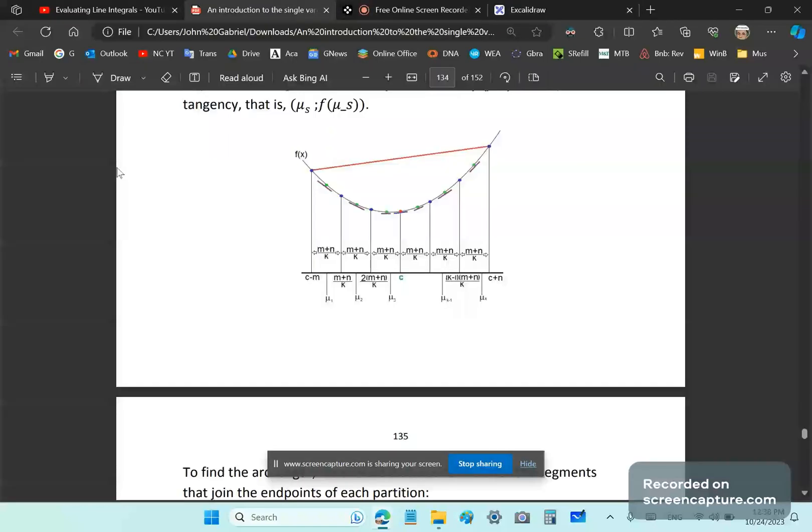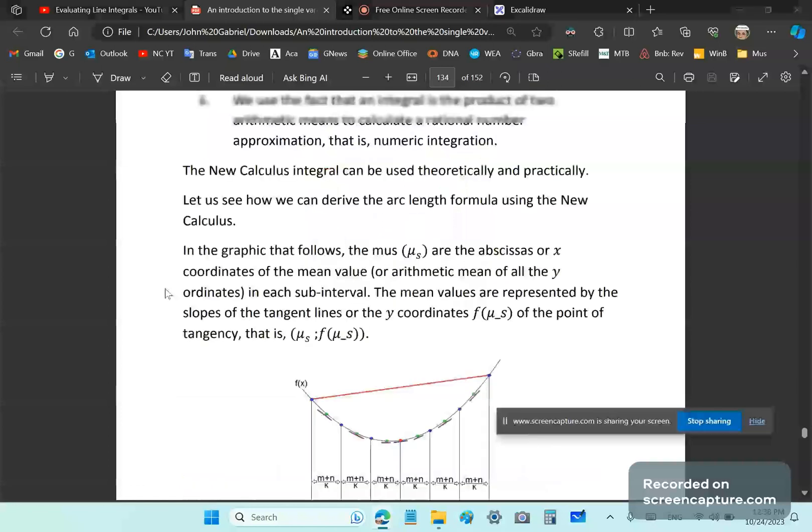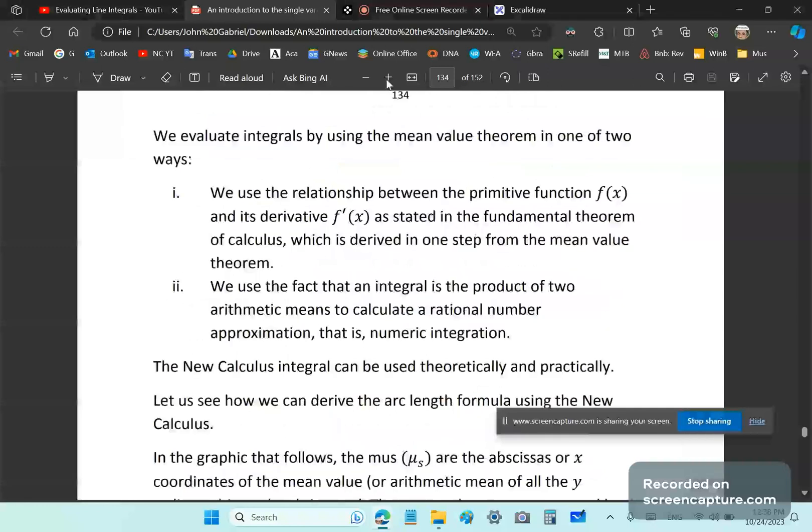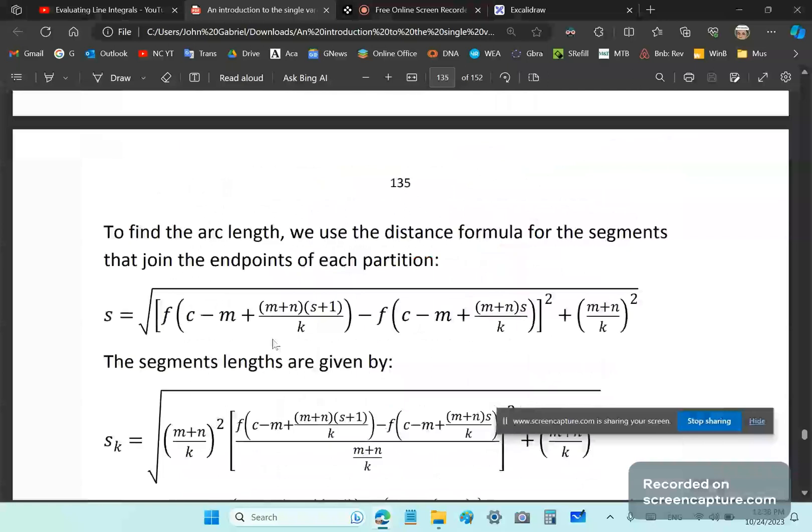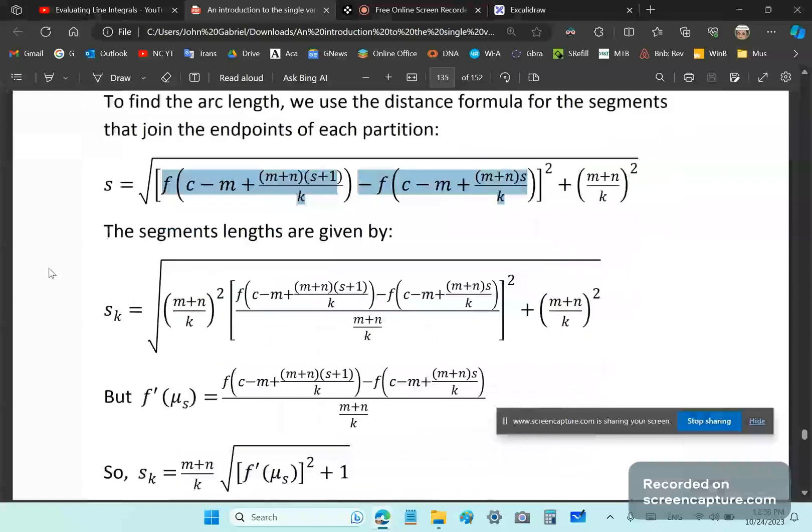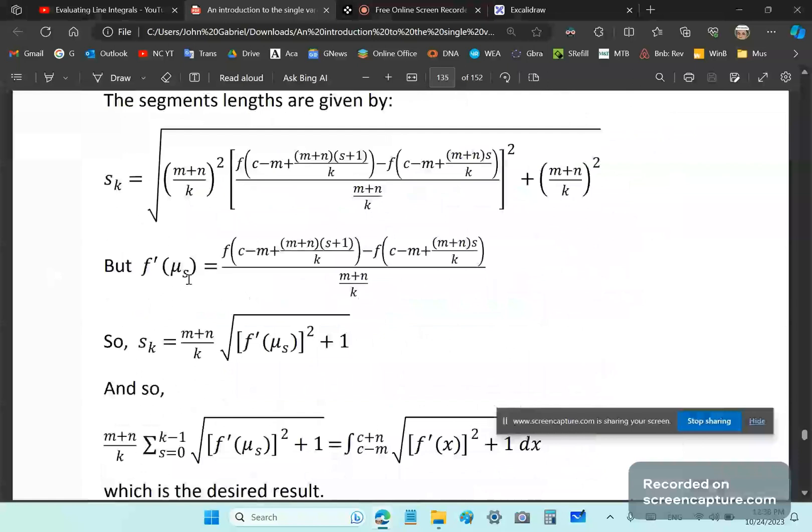Let's go to my free e-book which is an introduction to the new calculus and go to page 134. And here we see that we can take s as the distance formula and we can consider that the distance formula is composed of the difference of these two ordinates squared plus n plus n over k squared. Watch how beautifully this factors out. So we can bring them to the same denominator and we can take n plus n over k squared out and we're left with the mu sub s.